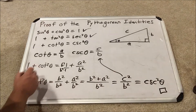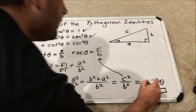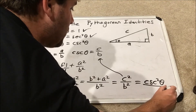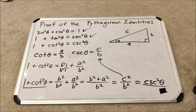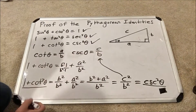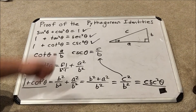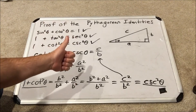Recall that c squared over b squared is cosecant theta squared, so we have cosecant squared theta. There is a direct connection between 1 plus cotangent squared and cosecant squared. You can also see why these are called the Pythagorean identities — they rely on the Pythagorean theorem to be proved. All three proofs of the Pythagorean identities are now complete. Thank you so much for watching — this is Falconator signing out.